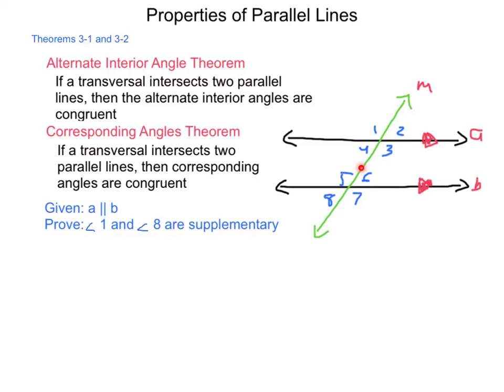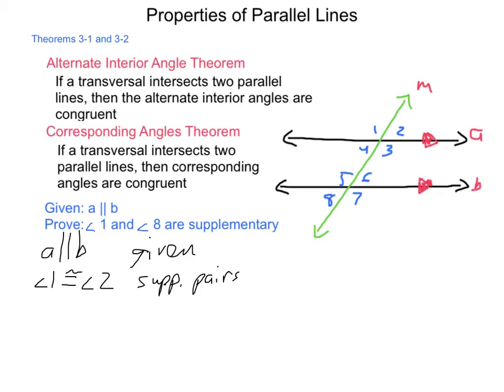Now, how can we prove — given that line A is parallel to line B — that angle 1 and angle 8 are supplementary? The proof develops as follows: A is parallel to B, and that's a given. Angle 1 is congruent to angle 2 by supplementary pairs. Next, because angles 2 and 6 are corresponding angles, they are congruent — angle 2 is congruent to angle 6 by the corresponding angles theorem.